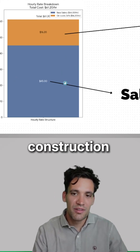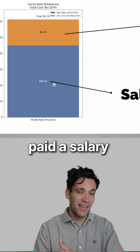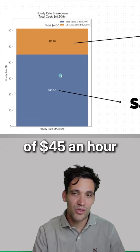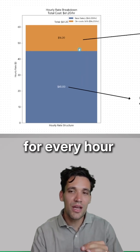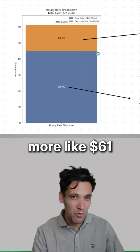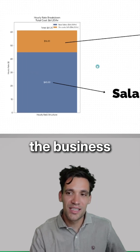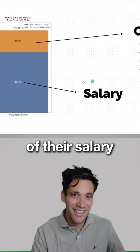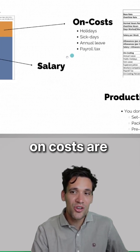Here's how to estimate construction labor costs. If someone is paid a salary of $45 an hour, the cost to the business for every hour they work is probably more like $61. That's because the cost to the business is made up of their salary plus their on costs.